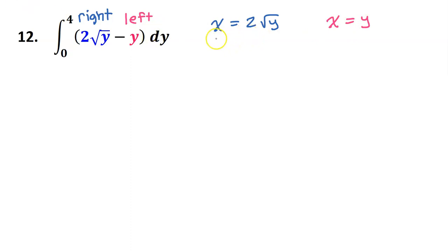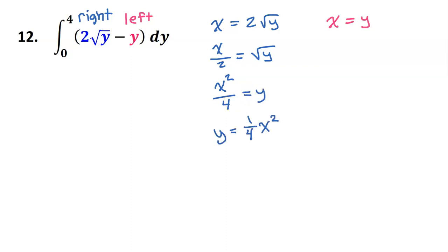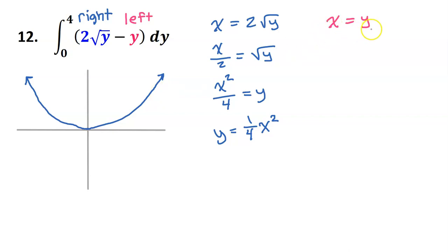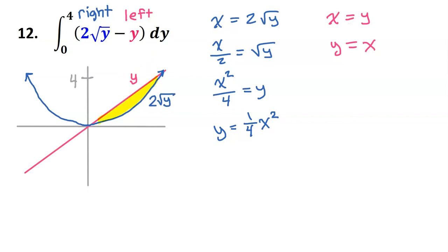To make it easier to picture what the graph looks like, let's solve for y. Dividing both sides by 2, x over 2 equals the square root of y. Squaring both sides gives x squared over 4 equals y, or y equals one-fourth x squared. This is a parabola whose vertex is at the origin. x equals y is the same as y equals x — a diagonal line with a slope of 1. We can see that the two curves intersect at a y value of 4, which is why we integrate from 0 to 4.